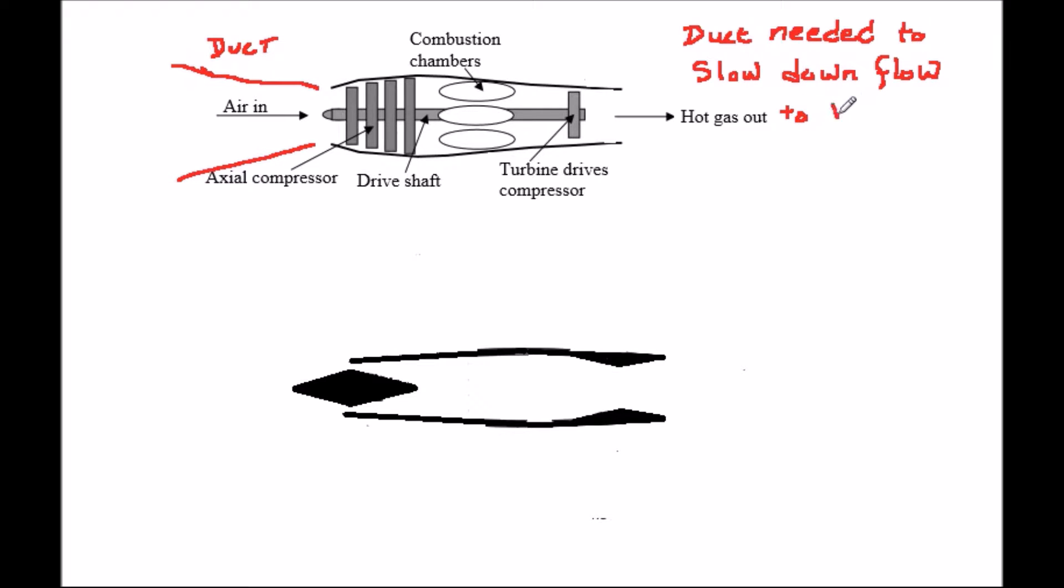This means that in turbojet powered supersonic aircraft, the air must be first slowed down to subsonic speed. This is done by having a duct before the engine.